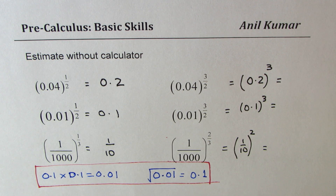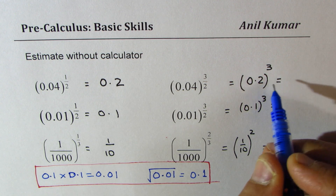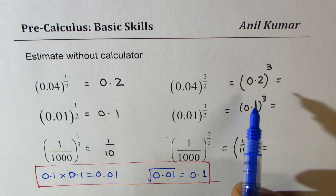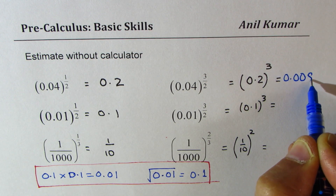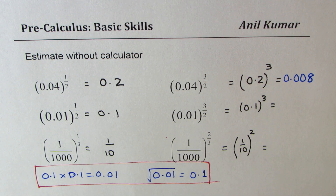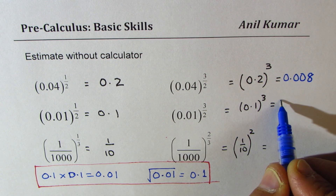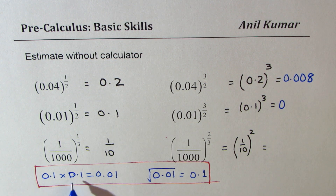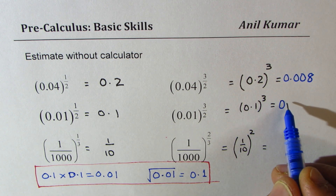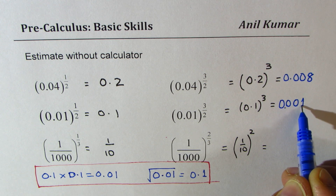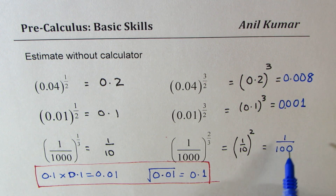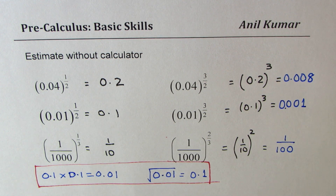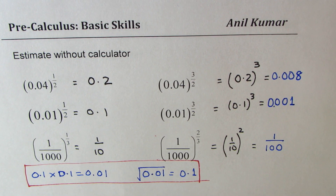When you do 0.2 cubed, the critical thing is the number of decimal places — 3 decimal places means 0.008. For 0.1 cubed: 0.1 squared is 0.01, so 0.1 cubed is 0.001. And 1 over 10 squared will be 1 over 100. I'd like you to pause the video, understand this logic, and then move forward — it's a very critical part of our video.